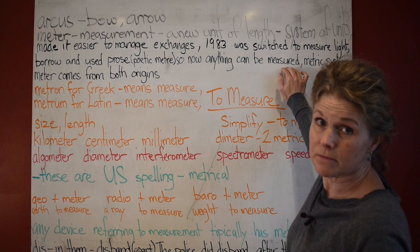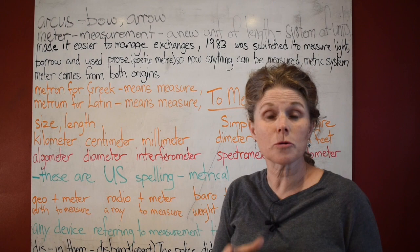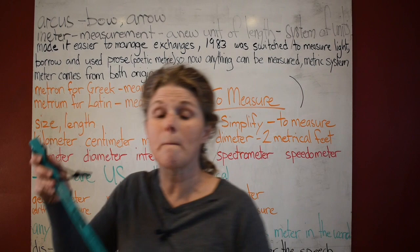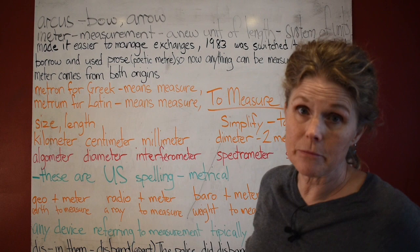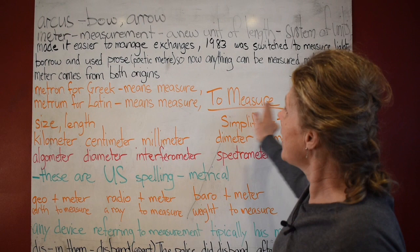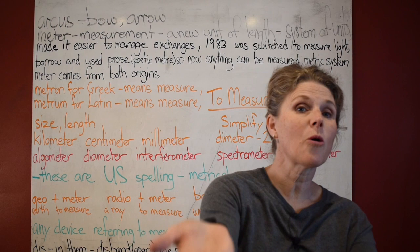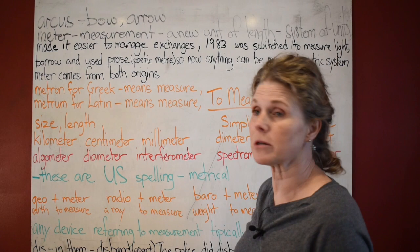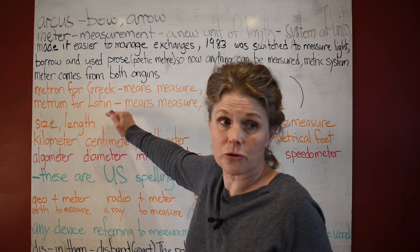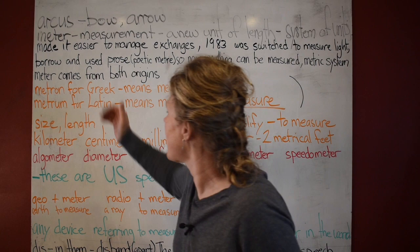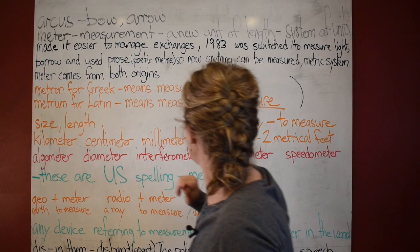Anything can be measured. We have the metric system where lots of things are measured in tens, and your actual measurement in the metric system is the meter. 'Meter' comes from both origins: 'metron' in Greek means 'to measure,' and 'metrum' in Latin means 'to measure.' So they've combined them — it just means 'to measure' no matter what.